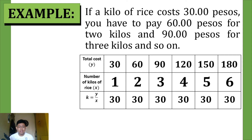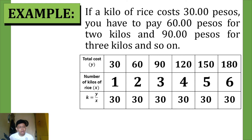Our constant of variation — if we divide total cost by number of kilos — we will get the same answer, which is 30. We get the constant of variation by simply dividing our dependent variable by our independent variable. Also, if x increases, y also increases; and if x decreases, y also decreases. That is a characteristic of direct variation.